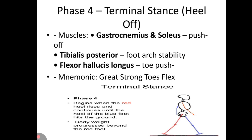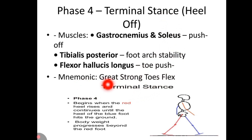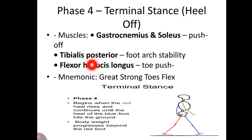Phase 4 is terminal stance — heel off. Muscles involved are gastrocnemius and soleus for push off, tibialis posterior for arch stability, and flexor hallucis longus for foot push. The mnemonic to remember is 'Great Strong Toes Flex': G of Great for gastrocnemius, S of Strong for soleus, T of Toes for tibialis posterior, and F of Flex for flexor hallucis longus.